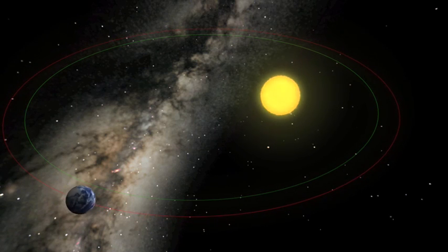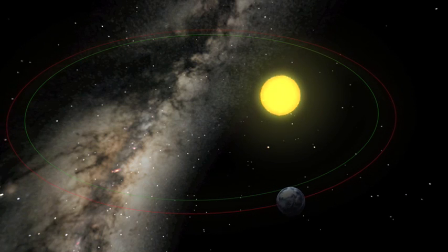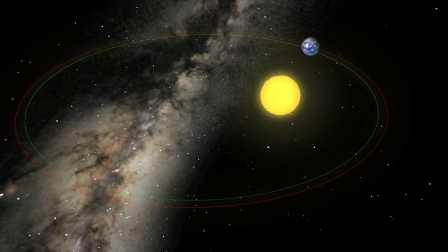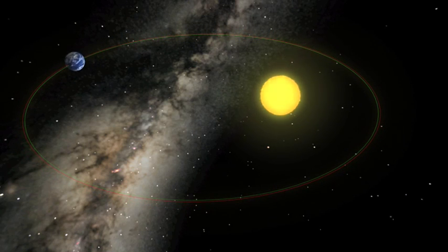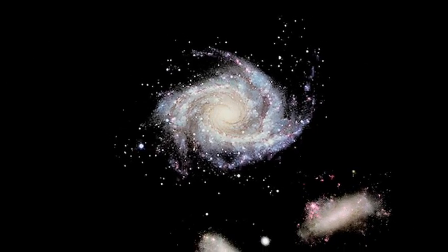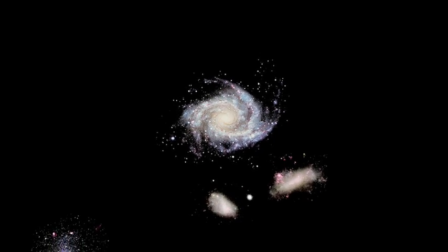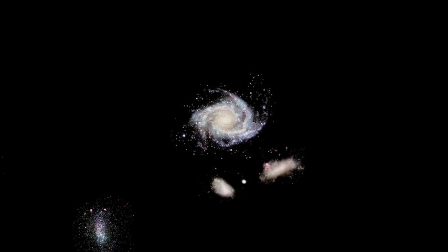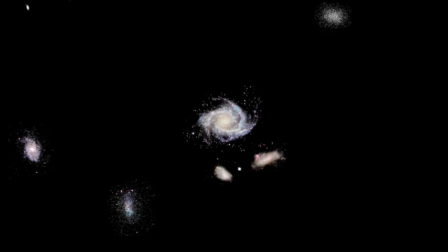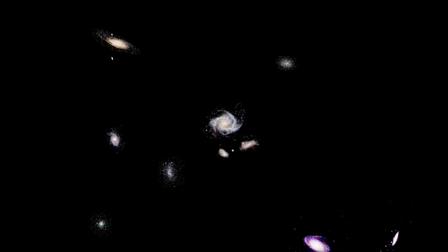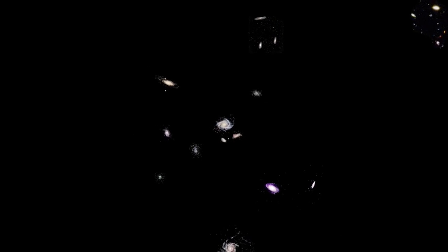Because as space expands, the Earth's orbit continually adjusts to keep the Earth at the correct distance that is demanded by the law of gravity. This is also true for stars inside a galaxy that are gravitationally bound, and is true even for local clusters of galaxies. As space expands, the distance between the bodies constantly adjusts to comply with the laws of gravity.